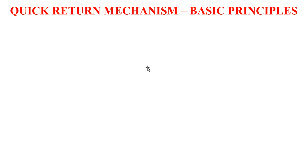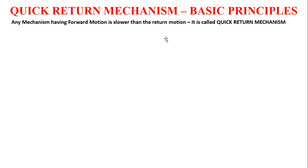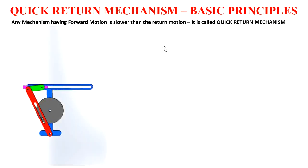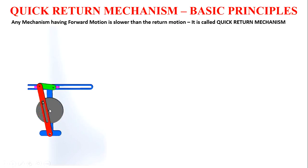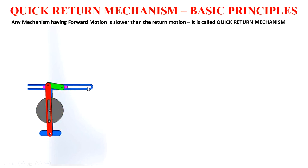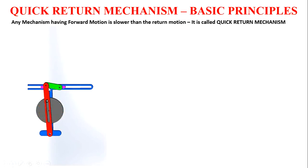We will go with some basic concepts of Quick Return Mechanism in this class. Any mechanism having a forward motion which is slower than the return motion is called Quick Return Mechanism. Now we can see the animation of this mechanism. This rotating part is called crank, which is fitted with a slotted bar. Whenever the crank starts rotating, the slotted bar starts oscillating on the path of the crank. We have attached one more link called connecting rod to a slider. Whenever this movement takes a certain time for moving from here to here, it will be moving faster when it moves back. That means this forward stroke has a slower time than the return stroke — you can observe that this is moving slower and the return is moving faster. So this is called Quick Return Mechanism.